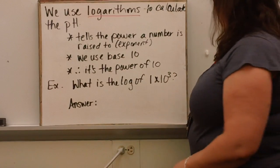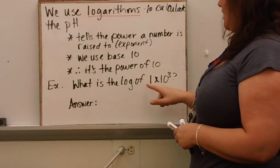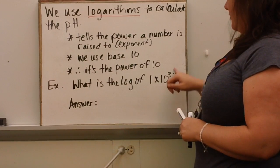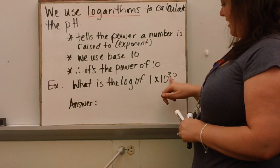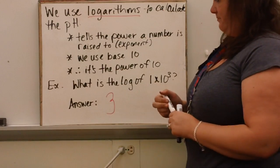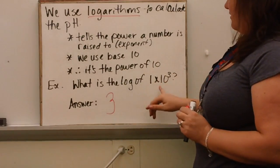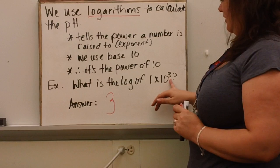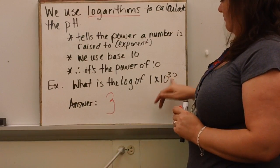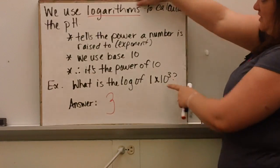For example, what is the log of 1×10³? Since it's the power of 10, the answer is 3. So a logarithm is just the power of the number being raised — in this case, the power of 10.